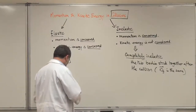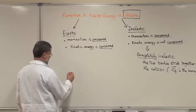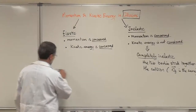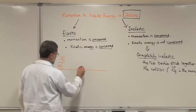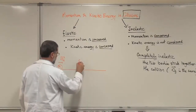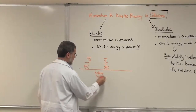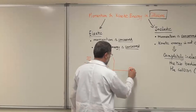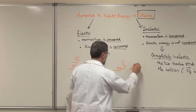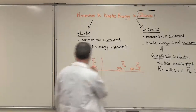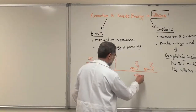Let's write the equation of conservation of linear momentum. We have mass M1 with velocity V1_initial and mass M2 with velocity V2_initial — this is before the collision. After the collision, M1 and M2 are moving with velocities V1_final and V2_final, still moving to the right with different velocities. This is after the collision.